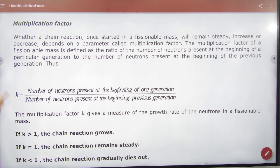Number of neutrons present at the beginning of one generation, when it started, how many neutrons, divided by number of neutrons present at the beginning of the previous generation. Now how many now and how many were old.